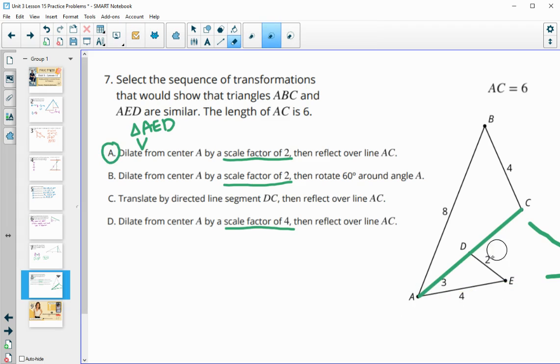B says do a scale factor of 2 and then rotate 60 degrees. So if we just rotated 60 degrees, the triangles wouldn't have landed on each other. So this one is not going to work. C doesn't have a dilation at all. So C is not going to work. And then D asks us to dilate by a scale factor of 4. So that's going to make this segment, or this triangle, much larger than it should be. So D is not going to work either.